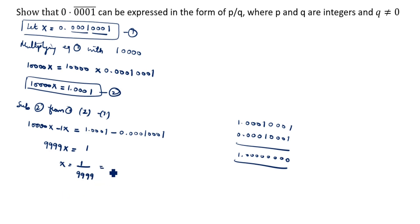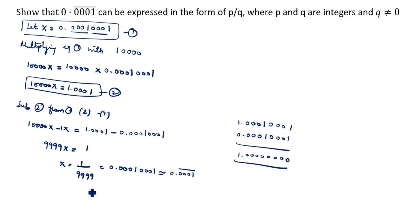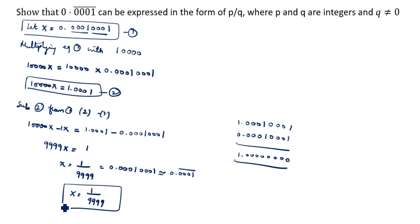So the answer comes out to 0.00010001..., which is approximately 0.0001̄. Therefore x equals 1 by 9999. This is the answer. Thanks for watching this video.